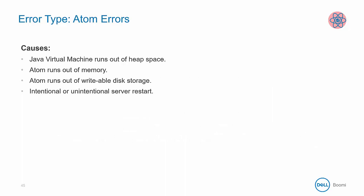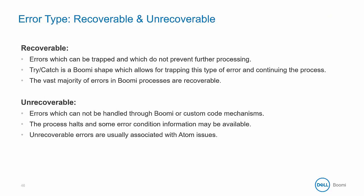Examples of atom errors include the JVM running out of heap space, the atom being out of memory on the machine where it resides, or running out of writable disk space. It can also happen when the server is disconnected, either for an intentional restart or unintentionally if connectivity is lost. Errors can be categorized as recoverable or unrecoverable. Recoverable errors can be trapped and do not prevent further processing — these are typically design-level errors, and the try-catch shape allows you to trap them and continue processing. The vast majority of errors in BOOMI processes are recoverable. Unrecoverable errors cannot be handled through BOOMI and are usually associated with atom issues — even the try-catch shape will not catch an error if your server goes down.